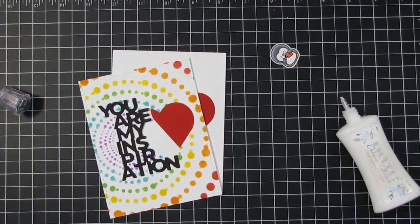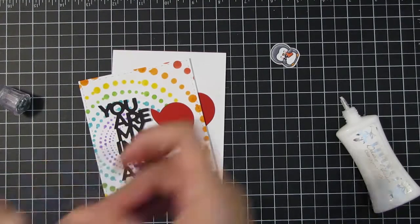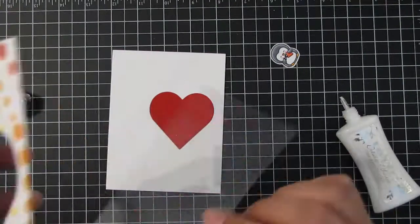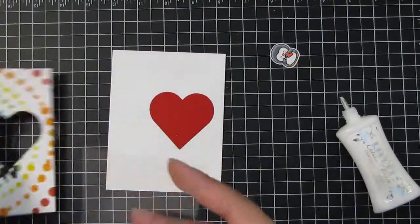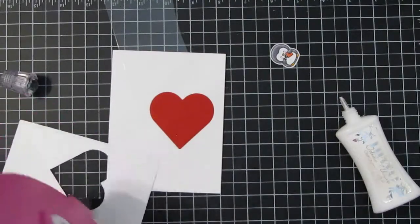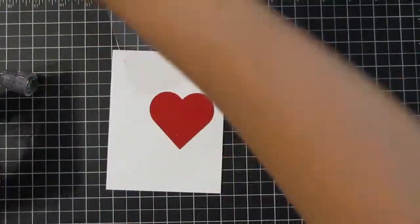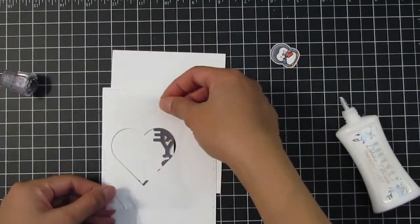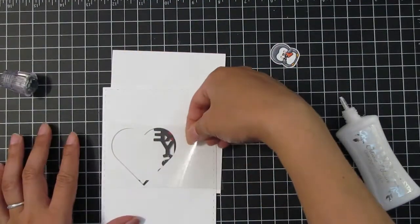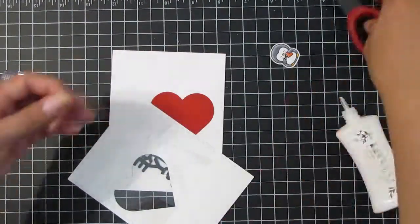Next I just take some scrap leftover acetate sheets that I have sitting around on my desk and I just go ahead and cover up that window. It had some glue on it, so I just got my microfiber cloth and cleaned that up, making sure that the window is nice and clear. As far as adhesive, I used adhesive tape to adhere the acetate sheet to the back of the heart there, and then I just cut off the excess.